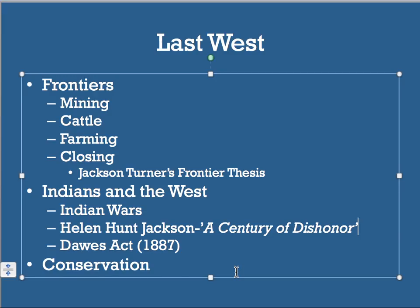Also in the West, we see the beginnings of the conservation movement, as we realize how badly we've deforested parts of California, killed the buffalo, and damaged the Midwest environment through farming. Places like Yosemite and Yellowstone become national parks, preserved from industry and exploitation. Key names for conservation include Carl Schurz as Secretary of the Interior, John Muir who founds the Sierra Club, the creation of Arbor Day, the Audubon Society, and later Teddy Roosevelt.